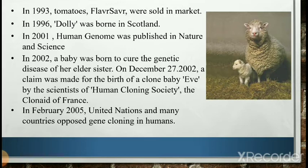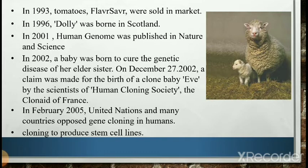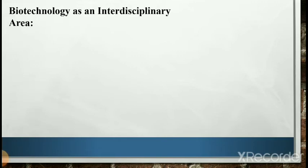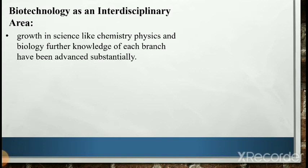In February 2005, at a meeting of the United Nations, many countries opposed gene cloning in humans while a few supported it only for the sake of research. In May 2005, scientists in South Korea used a method called therapeutic cloning to produce stem cell lines that are genetic matches to patients. Such stem cell lines could be used for disease research. The USA condemned this approach, in which human embryos were produced through cloning as done for Dolly, and stem cells were obtained from the blastocyst, then grown in vitro.